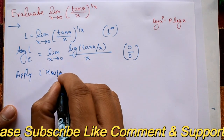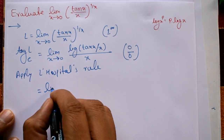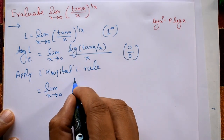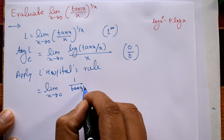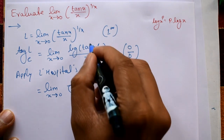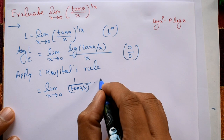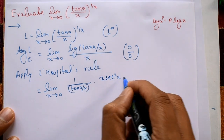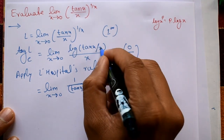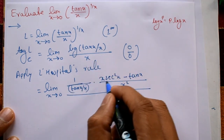Applying L'Hôpital's rule: differentiate numerator and denominator separately. The limit x tends to 0: differentiating the numerator gives (1 / (tan x / x)) times the derivative of (tan x / x). Using the quotient rule, the derivative of (tan x / x) is (x·sec²x − tan x) / x². The denominator differentiates to 1.